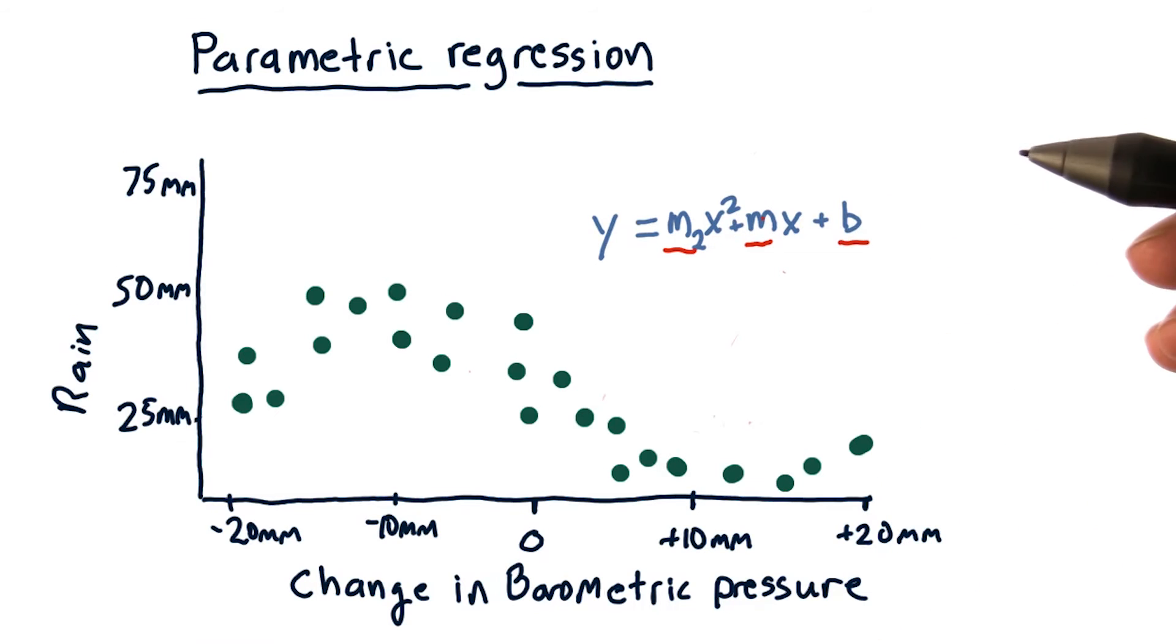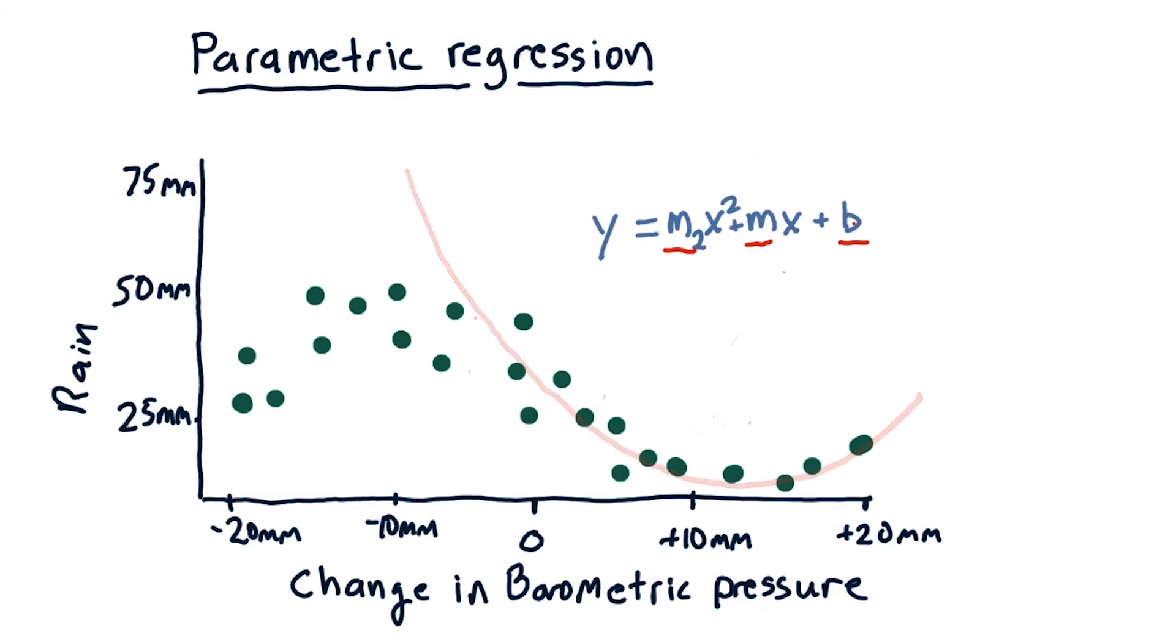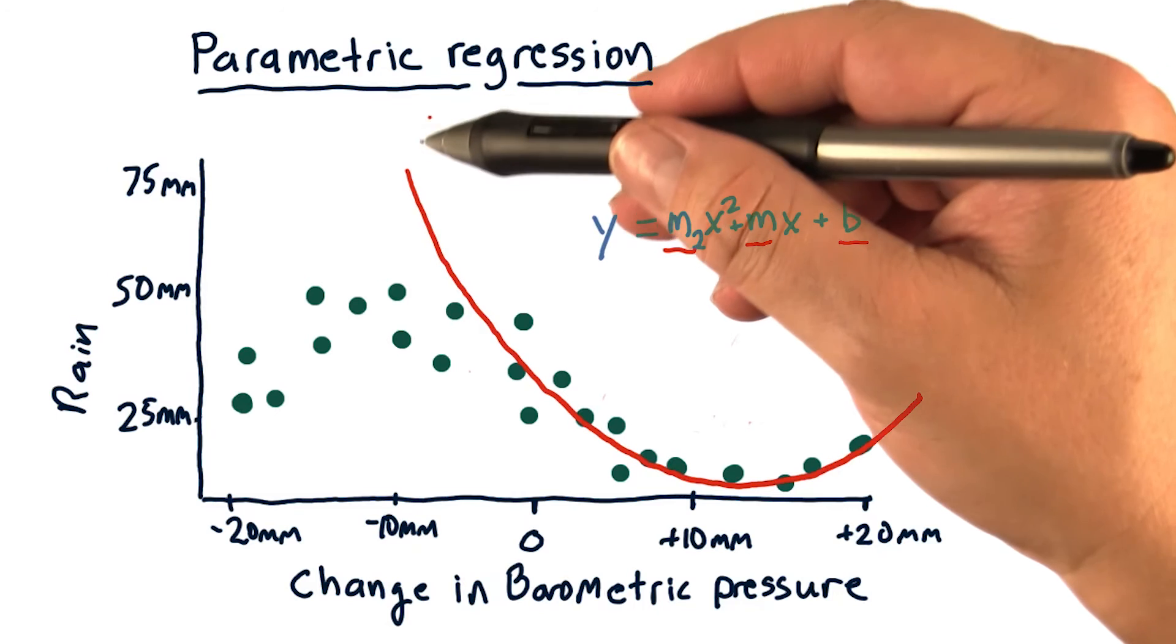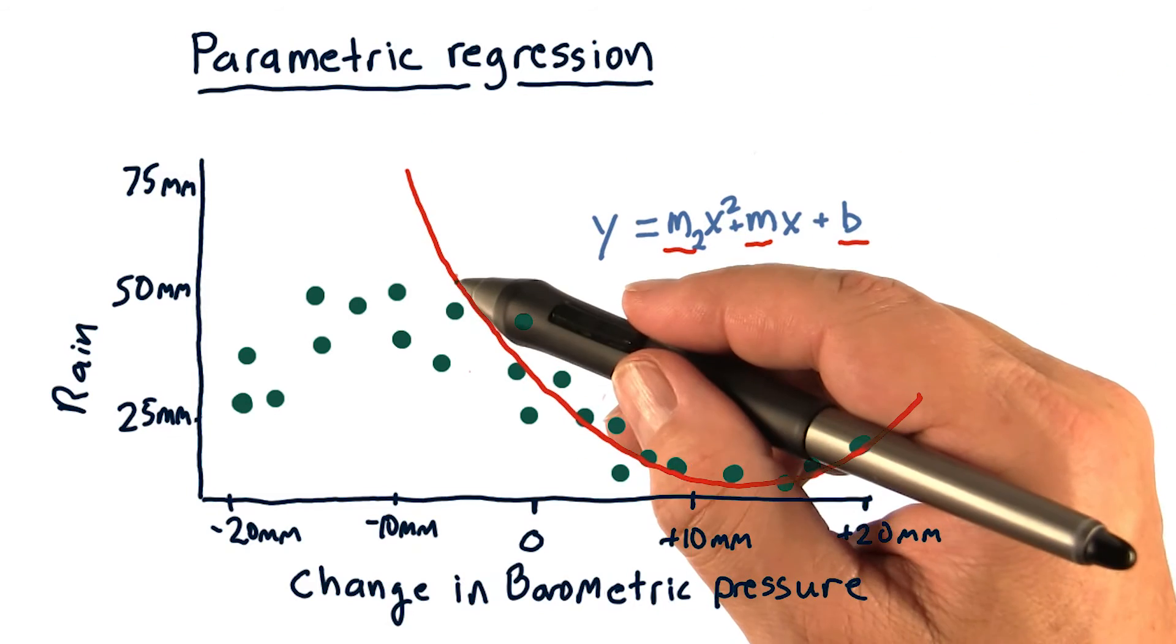When we find our model, it's now represented by three parameters: m, m2, and b. This polynomial model will look something like this. It fits the data pretty well over here, but not so well over here.